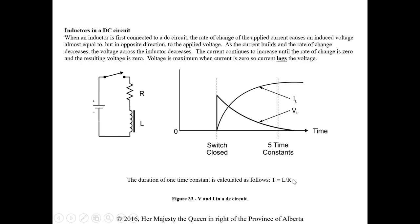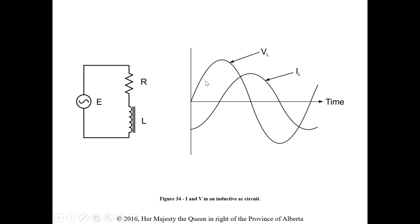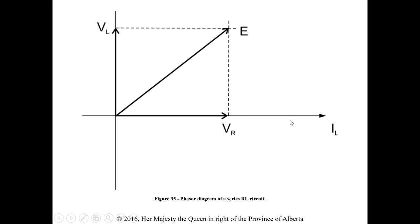They'll talk more about the capacitive circuit than the inductive going forward, but it's good to cover both. Here we see voltage peaking with current at zero — current is lagging voltage by 90 degrees. In a resistive and inductive circuit, the inductive voltage and resistive voltage add together to give total applied voltage, with current lagging as we rotate counterclockwise.